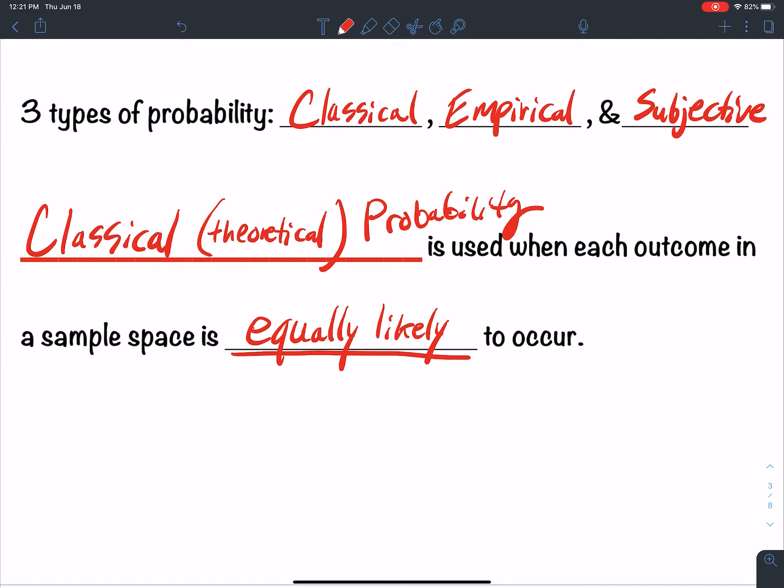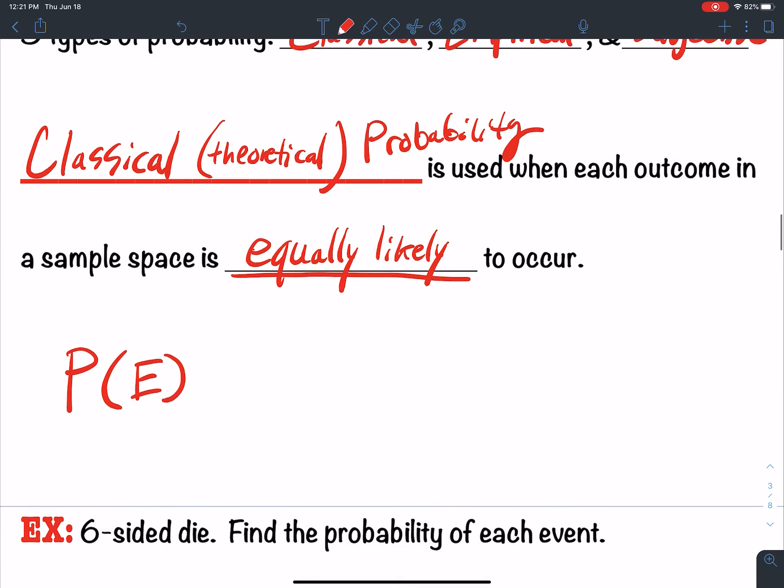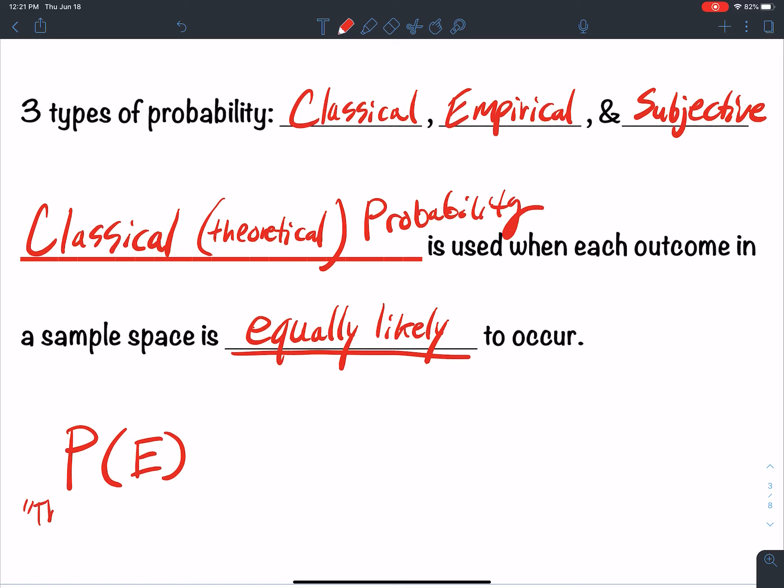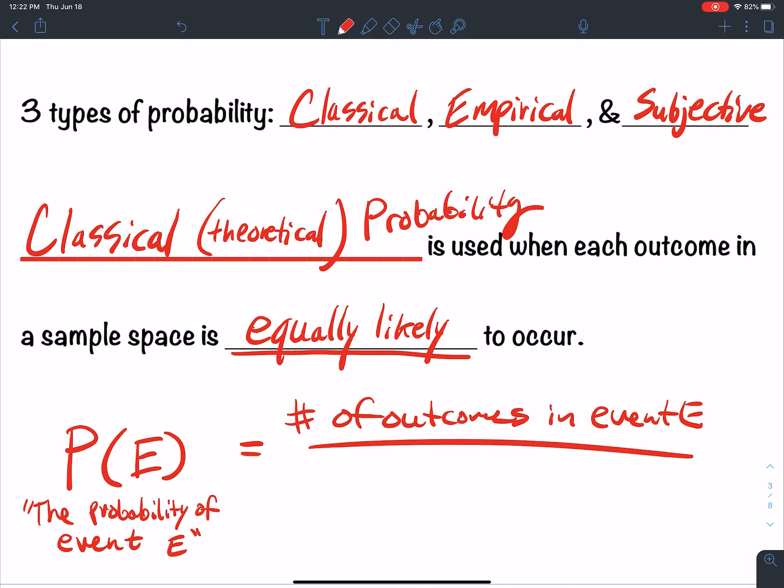So how do I calculate this? We use P of E, and the way I read this is the probability of event E is equal to the number of outcomes in event E divided by the number of outcomes in the sample space.